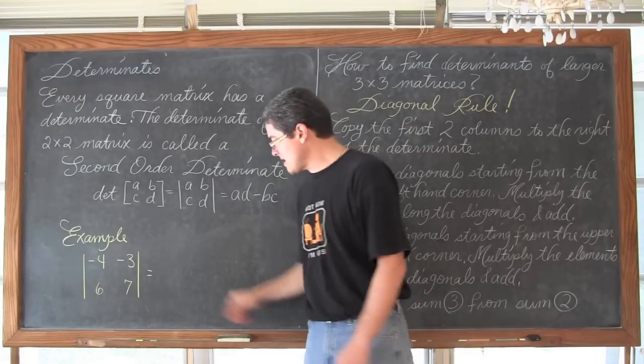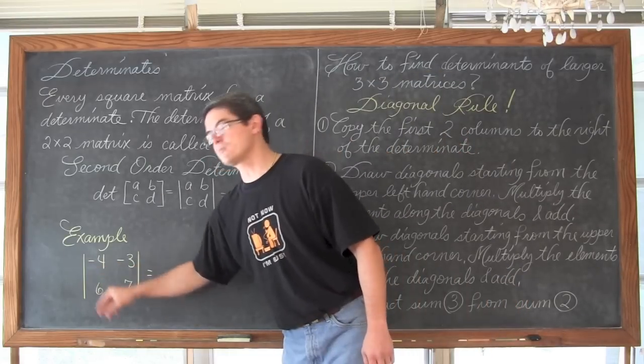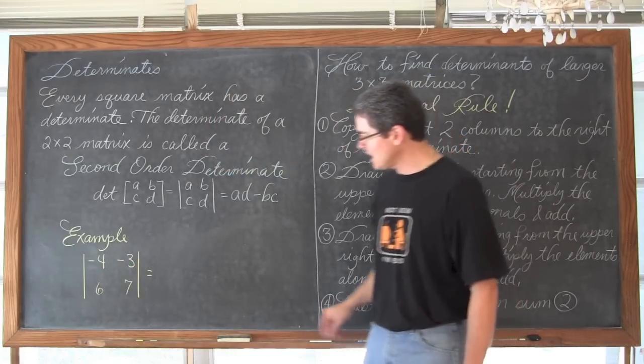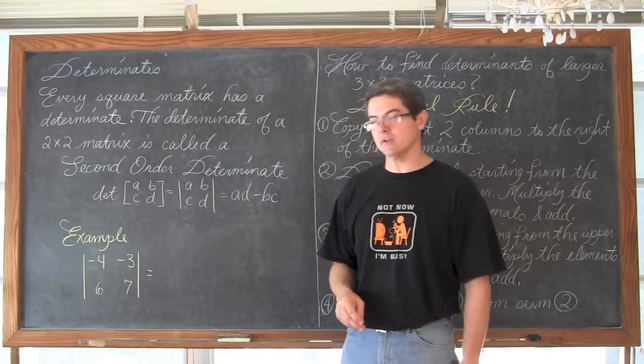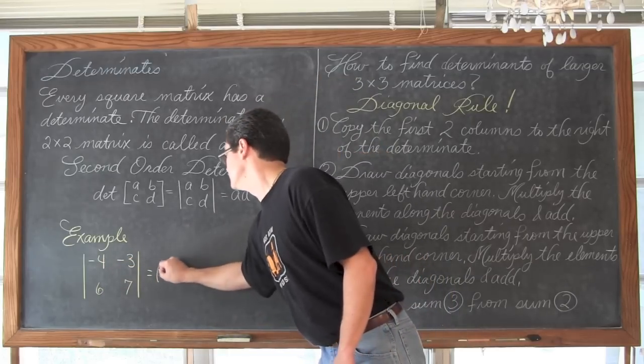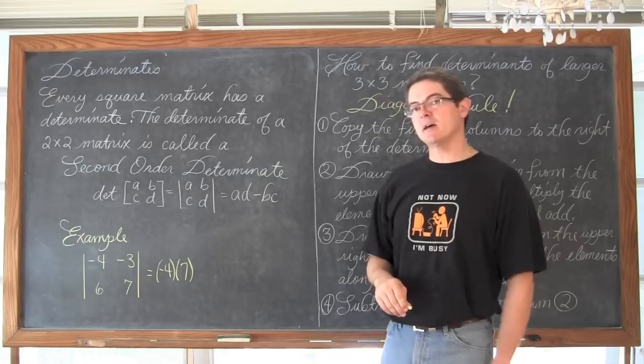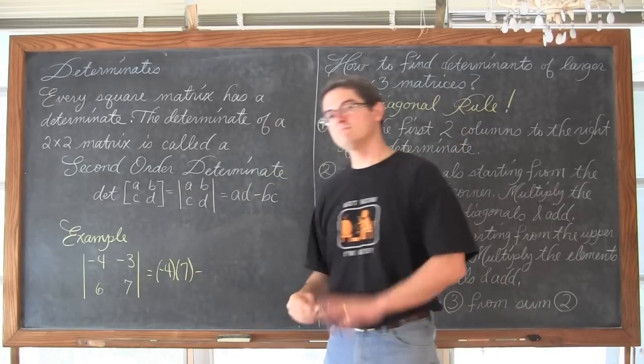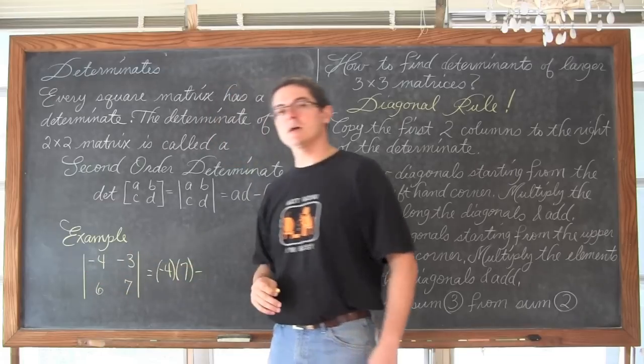Now that as an example here we have what is the determinant. I know it is the determinant again because of those straight brackets of the matrix negative 4, negative 3, 6, 7. Well following this pattern we are going to do negative 4 times 7, and then subtract that with the product going in the other direction. So we have negative 3 times 6.